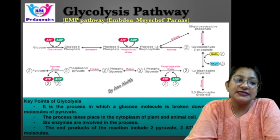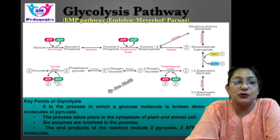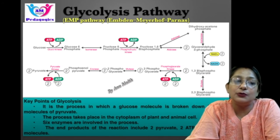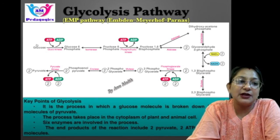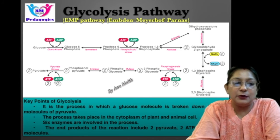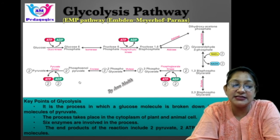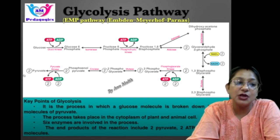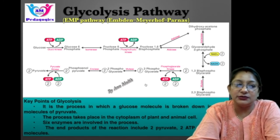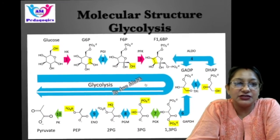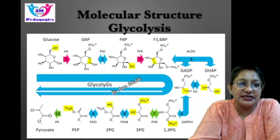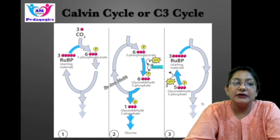Key points of glycolysis: it is a process in which a glucose molecule is broken down into two molecules of pyruvate. The process starts with glucose and ends with two pyruvate molecules. It takes place in the cytoplasm of plant and animal cells. Six enzymes are involved in the process. End products include two pyruvate molecules, two ATP, and two NADH molecules. A molecular structure diagram of the glycolysis process is also shown here.